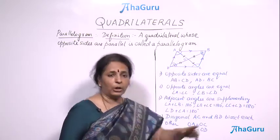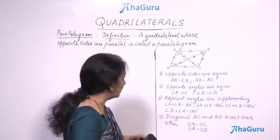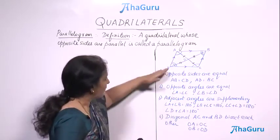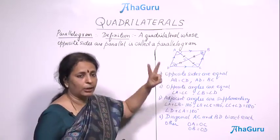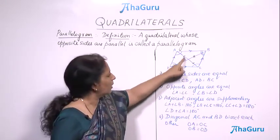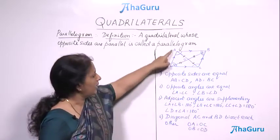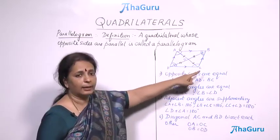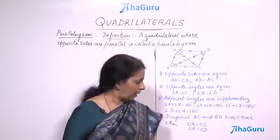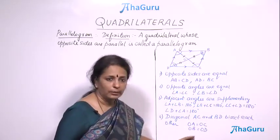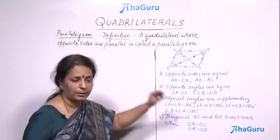Then diagonals AC and BD bisect each other — they are meeting and intersecting at point O. Not only are they intersecting, they are bisecting each other. Diagonal BD cuts AC into two equal parts OA and OC. Similarly, diagonal AC cuts BD into two equal parts OB and OD. These are the properties we are going to prove.